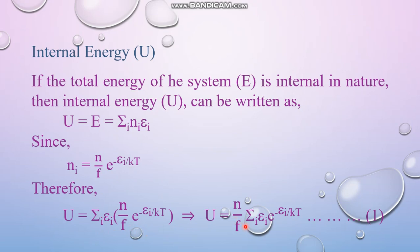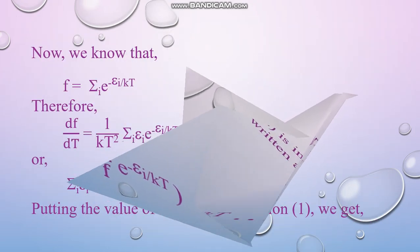So U can be written as N by F sum over i epsilon_i e to the power minus epsilon_i by kT. This is equation number one.